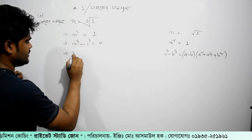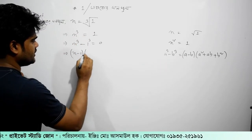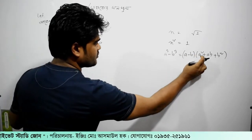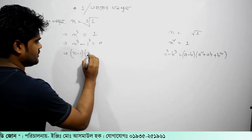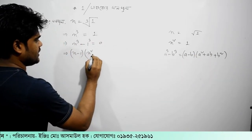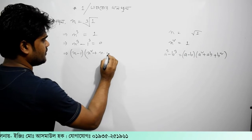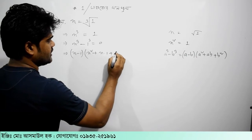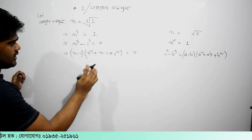I will write a minus b into a square plus ab plus b square. So, a square plus ab plus b square equal to 0.